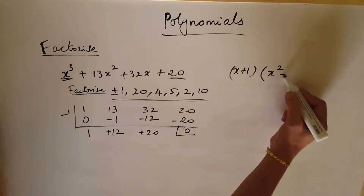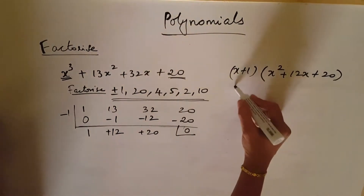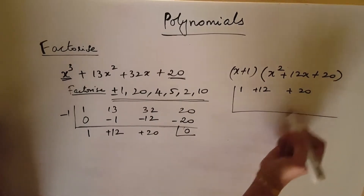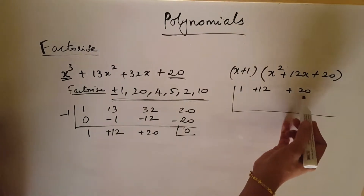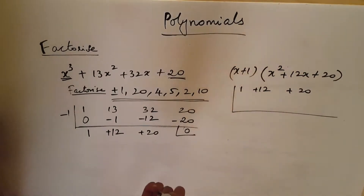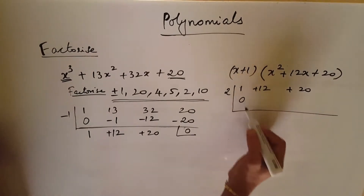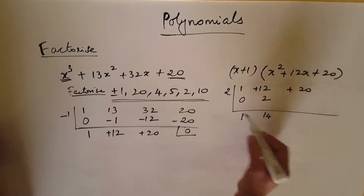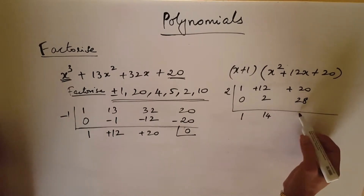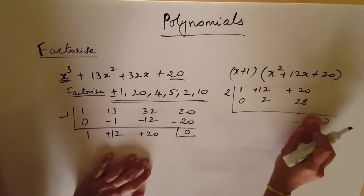The quotient is x squared plus 12x plus 20. Now working on this: factors of 20 include 2 and 10. We try 2: coefficients 1, 12, 20. We get 1, 14, 28, giving remainder 48 — not 0. So we try minus 2.